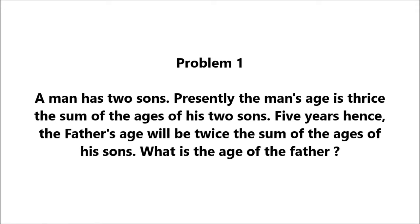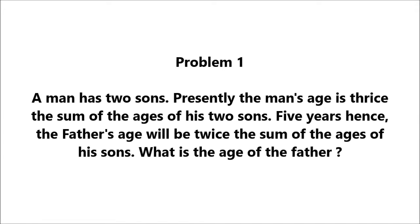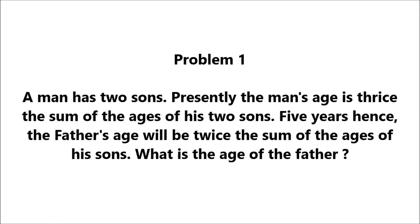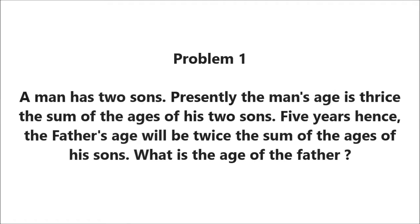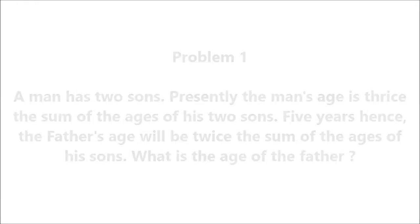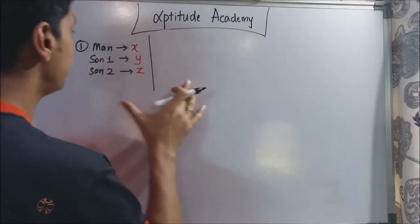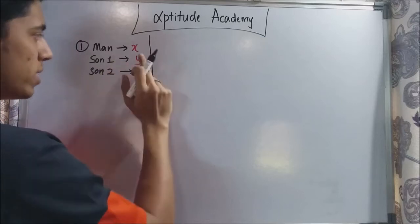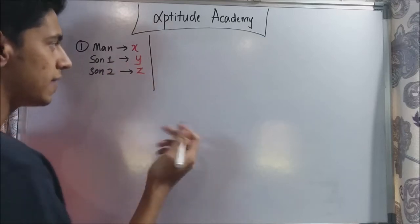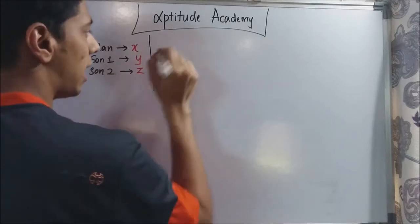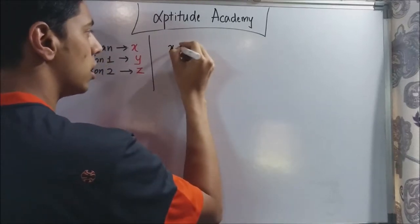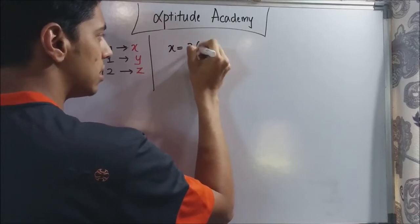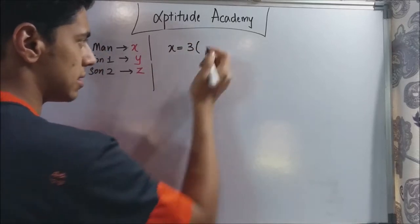Five years hence, the father's age would be twice the sum of the ages of his sons. What is the age of the father? For the first problem, let us assign the man's age as x, and son 1 and son 2 as y and z. They have said that at present the man's age will be three times the sum of the ages of his two sons.